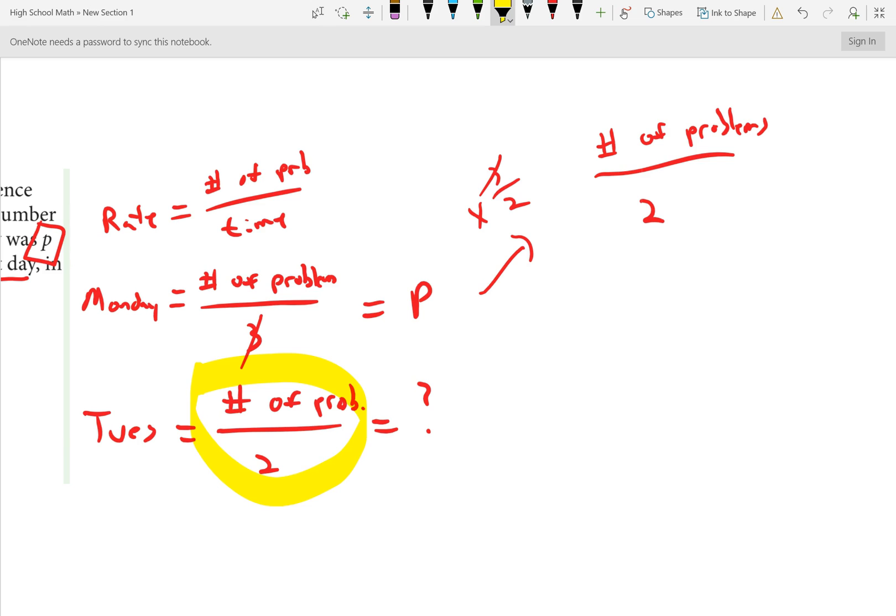Whatever I do to one side, I do to the other. So, if I multiplied the left side by three over two, I need to multiply the right side by three over two. That makes that three over two P. So, I see that the number of problems divided by two, which was the Tuesday rate, is going to be three over two P.